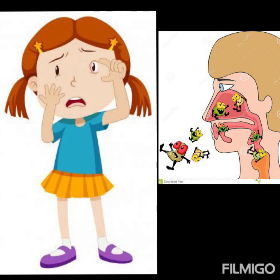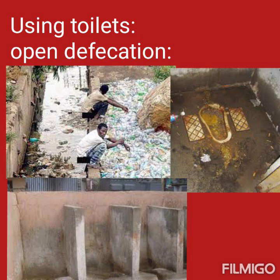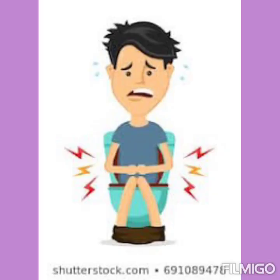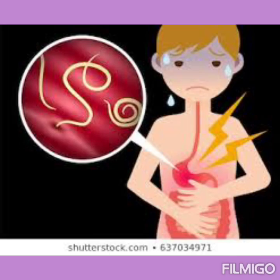Next, we have to know how to use our toilets. In the world, many people are not using toilets — they are forced to do open defecation, which means the discharge of feces from the body. Open defecation causes diseases such as cholera and diarrhea. Children are also affected by these diseases. They get intestinal worms, which live inside the intestine and cause diseases, as well as anemia.